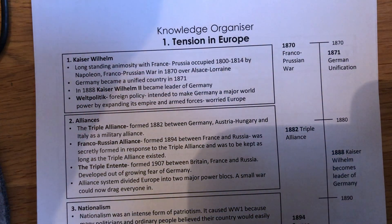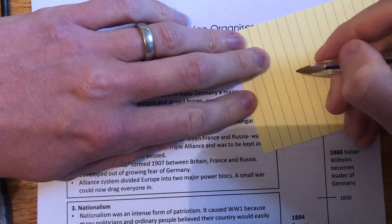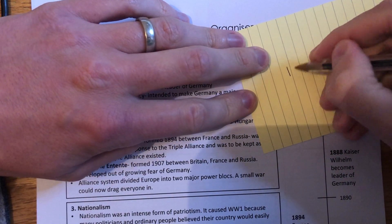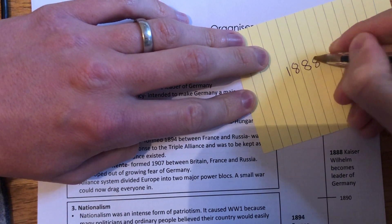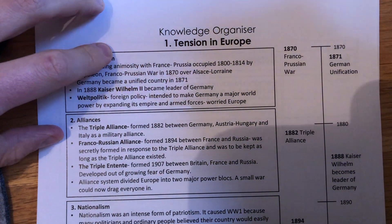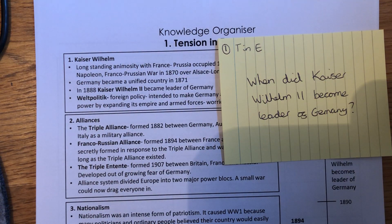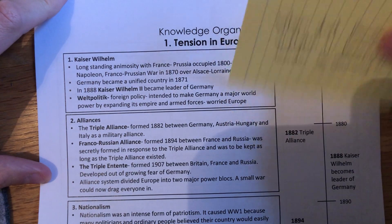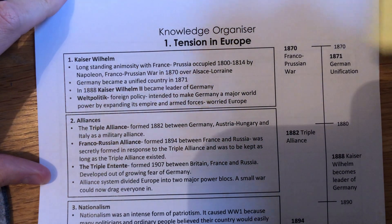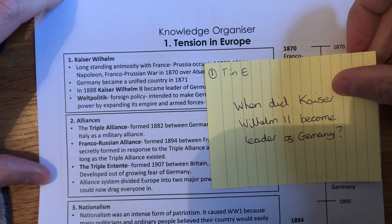And then on the opposite side, I'm just going to put the answer: 1888. And there you go — we've just created a flashcard. There's not a huge amount of information on there, it's not too taxing or frightening to learn. It's really straightforward.